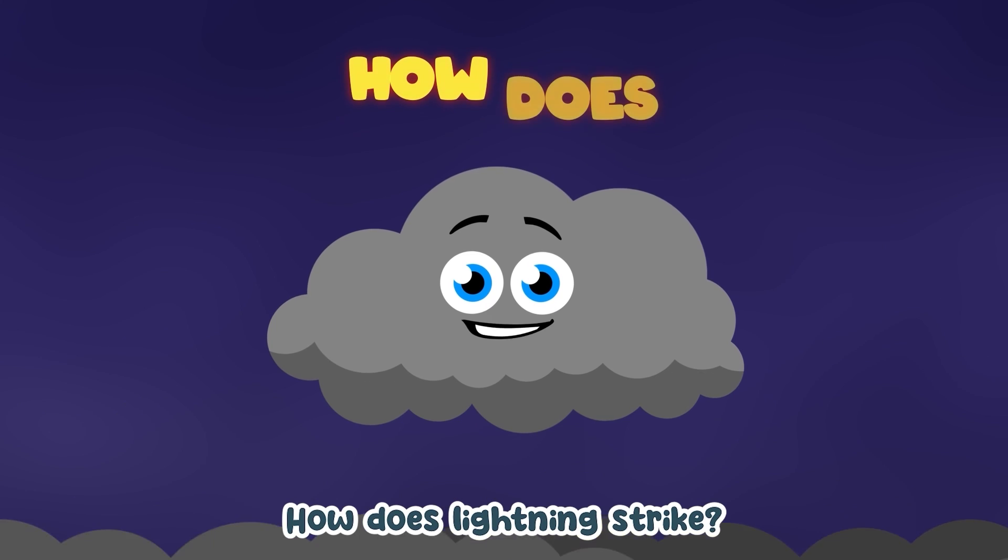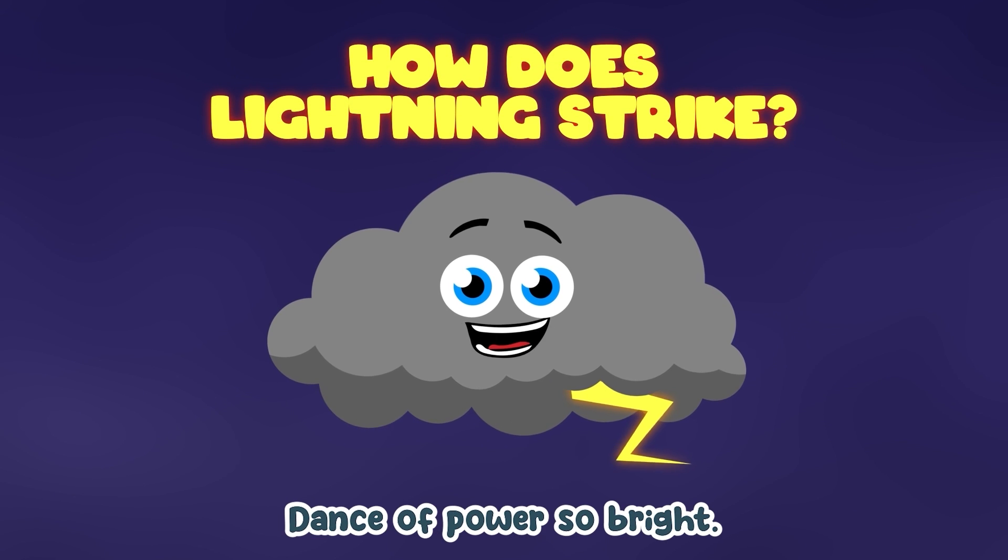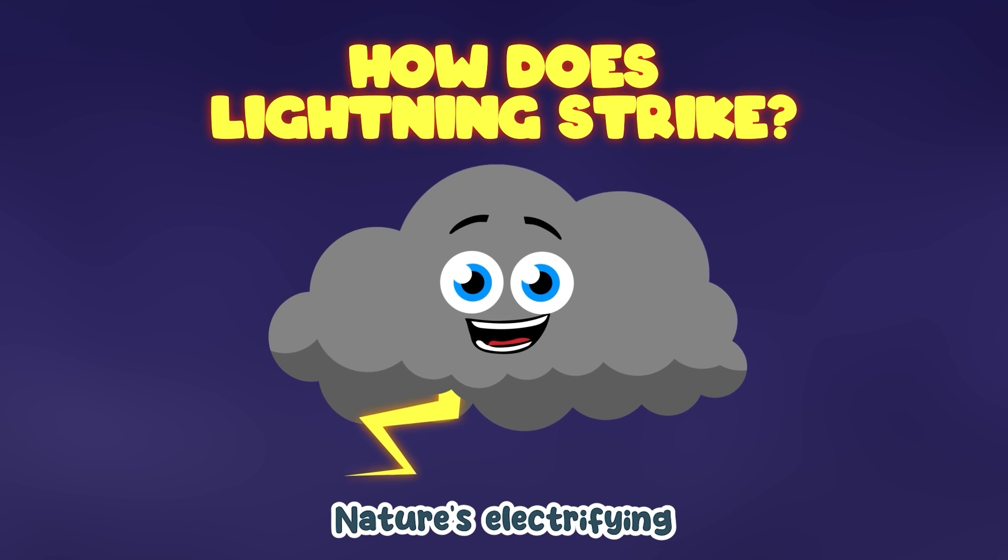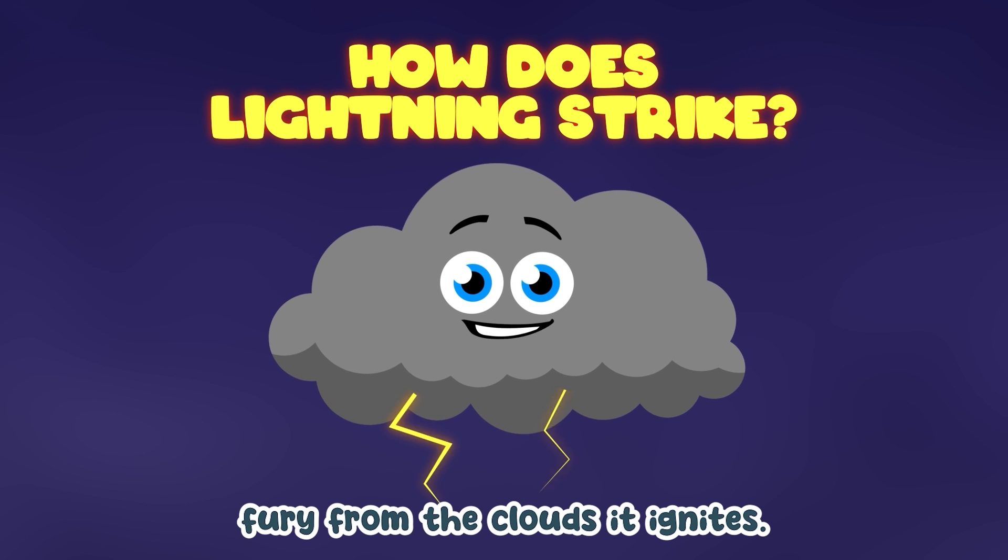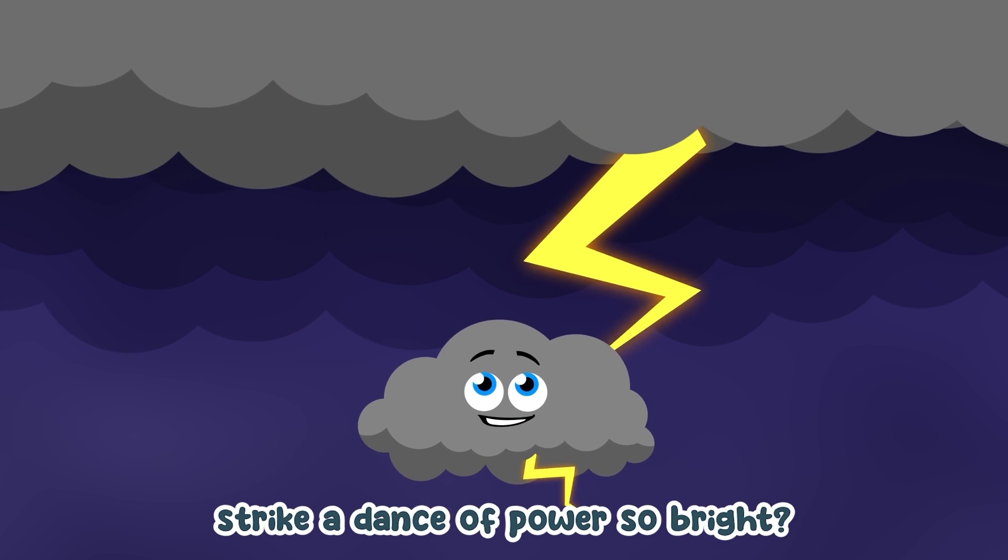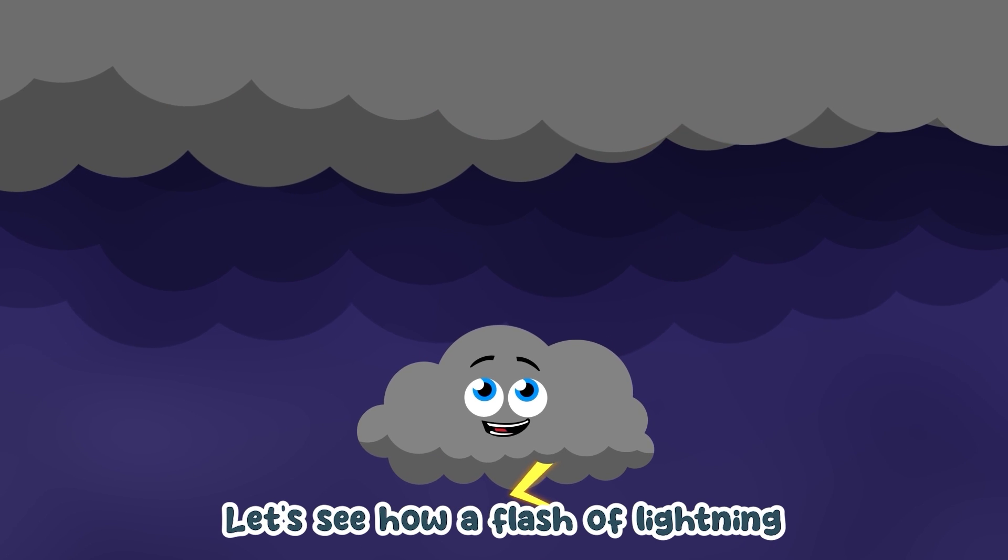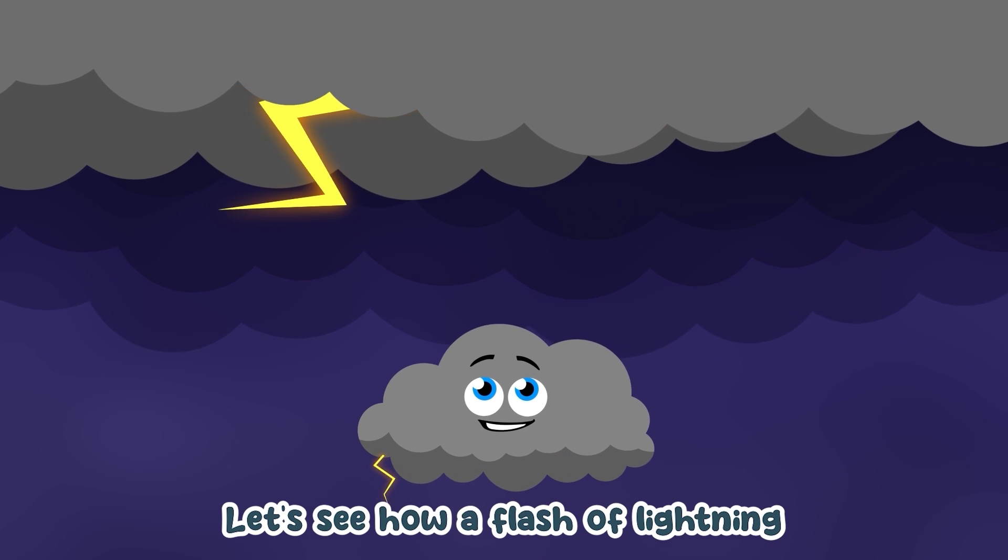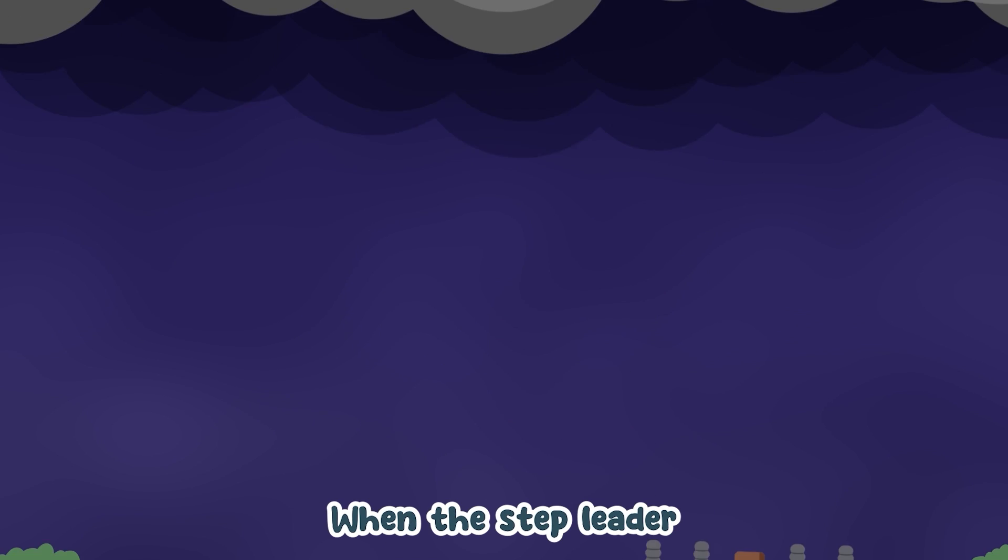On the ground an upward leader does form from the ground as the positive charges move up, searching for negative charges hanging around. How does lightning strike? A dance of power so bright.